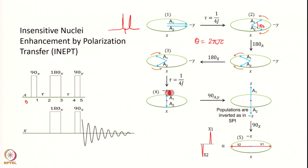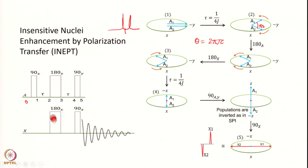Now I apply a 180° pulse on the A spin. A2 will come to one position and A1 to another, and they continue to move in the same directions. The trick is I also apply a 180° pulse to the X spin. Applying 180° to X inverts the alpha and beta states of the X spin — converting alpha to beta. When that happens, the two A transitions get interchanged: A1 becomes A2 and A2 becomes A1. Therefore, the slower becomes faster and the faster becomes slower.